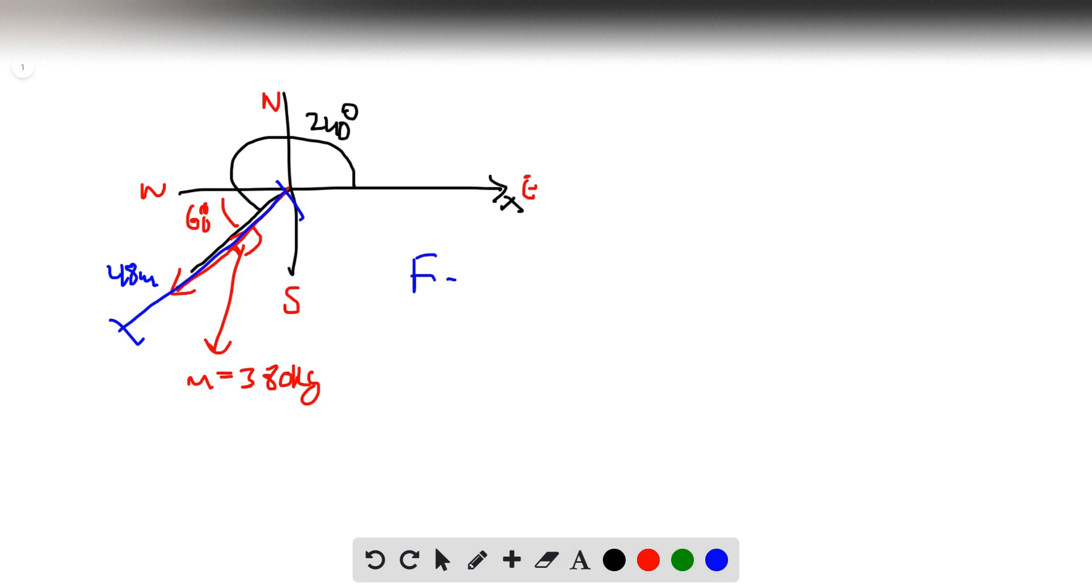Given the force in terms of vectors, the force vector is negative 68.0 newtons I hat plus 36.0 newtons J hat. That's the force that's pushing the car in the southwest direction, 240 degrees from the X direction.